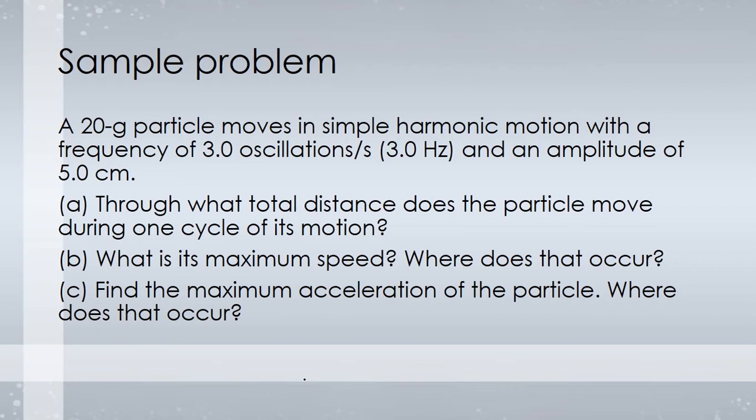Question A: Through what total distance does the particle move during one cycle of its motion? Next, what is its maximum speed and where does that occur? C, find the maximum acceleration of the particle and where does that occur. So speed, then acceleration, then distance.